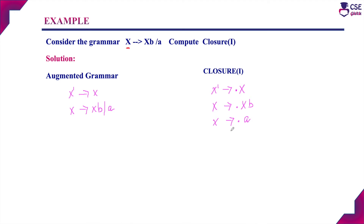This gives us the closure of I. Now, considering X derives dot XB — after the dot there is a non-terminal X again, but we have already added the dot-productions for all productions of X. After the dot, if a terminal appears, no further expansion is needed. If a non-terminal appears after the dot, we must again add dot-productions for that non-terminal's rules. This procedure continues until there are no more non-terminal productions to expand.